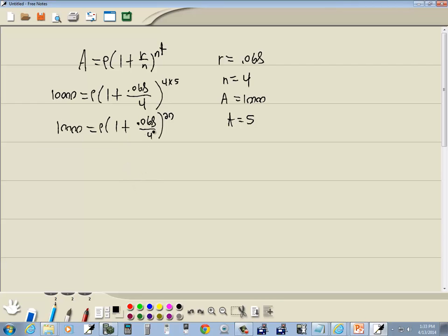Now I want to get P by itself so I divide both sides by this. So we got 10,000 divided by 1 plus .068 divided by 4 to the 20th power.